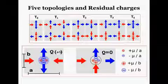It also depends on the ratio A over B. Only topology T1 does not have residual charges, but it has residual magnetic moment.